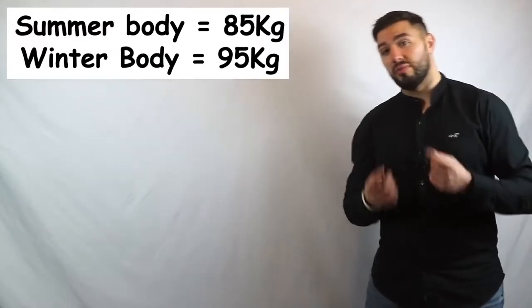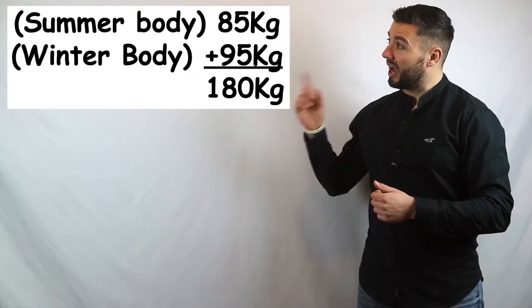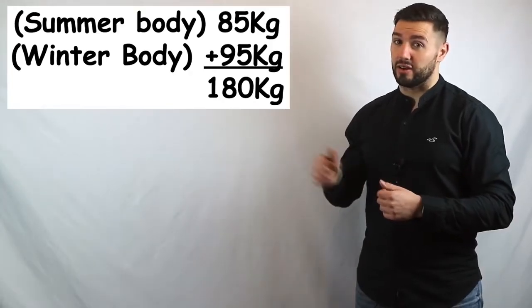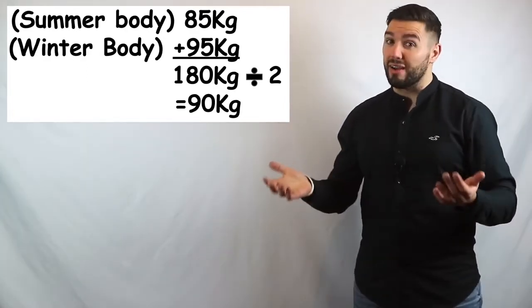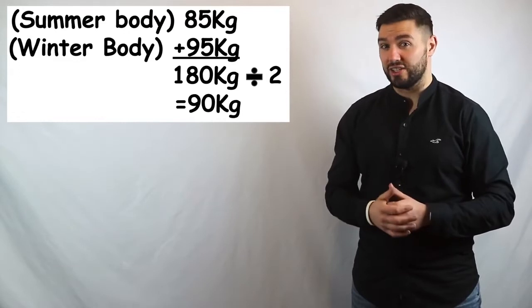So, if we take those two masses, 85 and 95, how do I find out the average mass that I weighed during the year? Well, it's pretty simple. I add the 85 and 95 together, and then I divide by the number of me that was there, so 2, which gives me 90. So, my average mass is 90 kilograms.